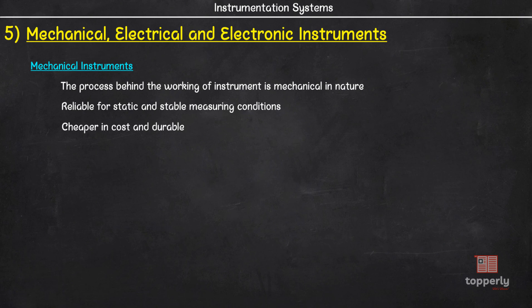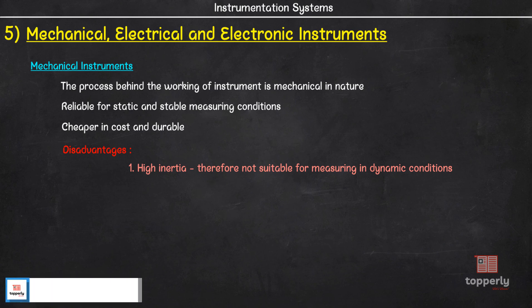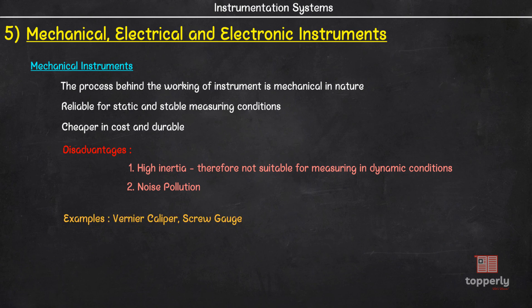However, mechanical instruments also have some major disadvantages. As they have moving parts that are rigid, heavy and bulky, these instruments possess high inertia and therefore are unable to faithfully follow the rapid changes which are involved in dynamic and transient conditions. Another disadvantage of mechanical instruments is that most of them are potential source of noise and thereby cause noise pollution. Some examples of mechanical instruments are vernier calipers and screw gauge.